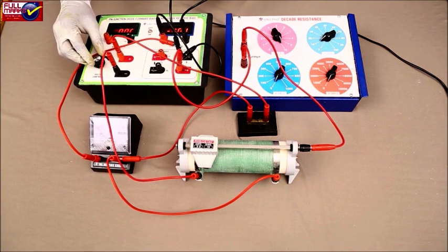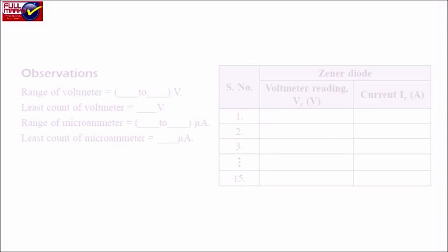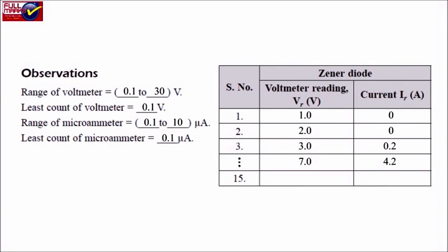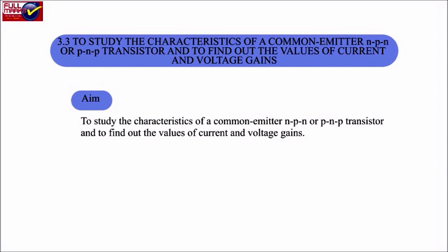Note down your observations in tabular form. Result: The value of reverse breakdown voltage of the given Zener diode, obtained from the graph, is [recorded value].